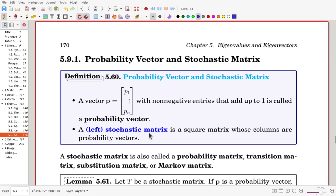A stochastic matrix is also called probability matrix, transition matrix, substitution matrix, or Markov matrix. We'll use this term, stochastic matrix.